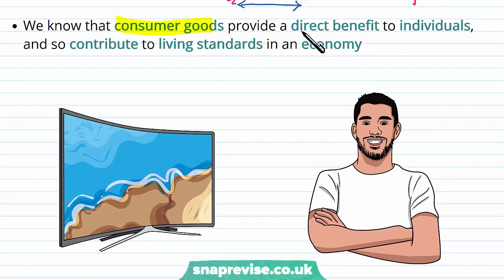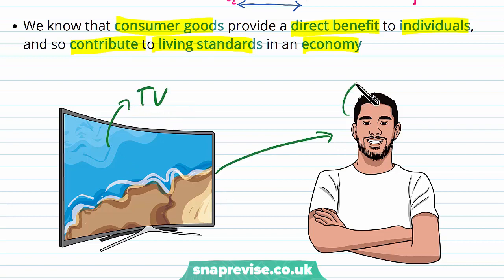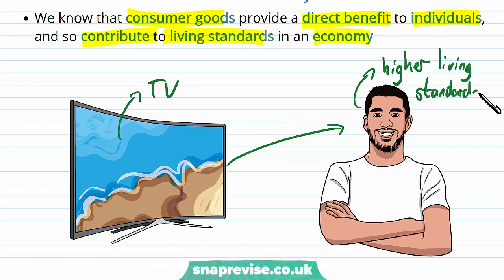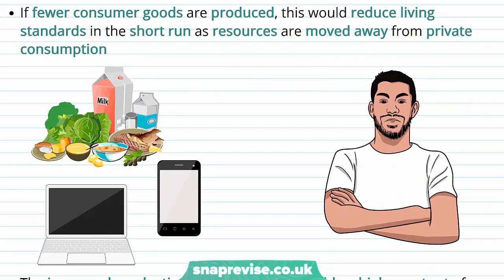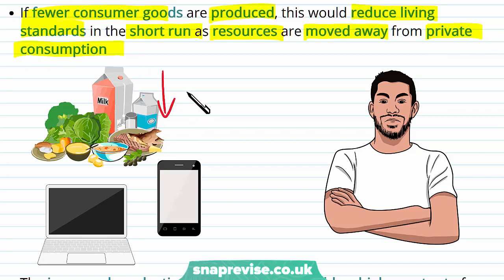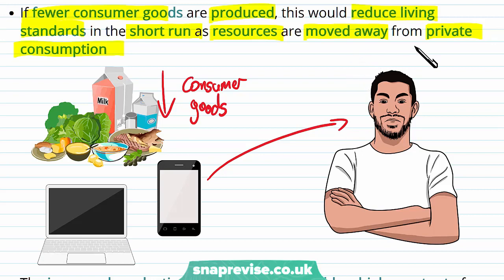Consumer goods provide a direct benefit to individuals and so contribute to living standards in an economy — something like a TV provides a direct level of utility to our consumer, giving them a higher level of living standards. If there are fewer consumer goods being produced, this would reduce living standards in the short run as resources are moved away from private consumption. The total amount of welfare available has fallen, and thus living standards fall.